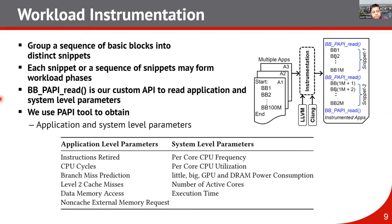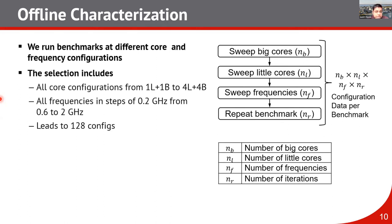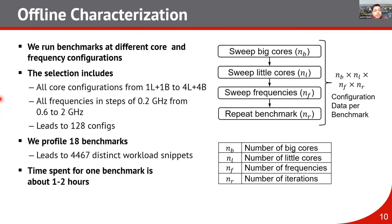For each workload snippet we collect application-level and system-level parameters, then perform offline characterization by running benchmarks at different core and frequency configurations. We use a Samsung Exynos development board with four little cores and four big cores, so configurations range from one-little/one-big to four-little/four-big cores, with frequency swept from 0.6 GHz to 0.2 GHz in 0.2 GHz steps, yielding 128 configurations.